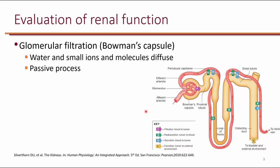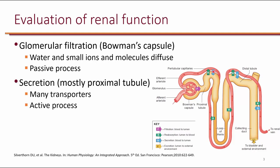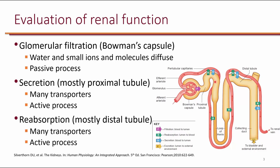Glomerular filtration is a passive process that occurs in the Bowman's capsule. During this process, water and small ions and molecules, including drugs, diffuse passively into the lumen. Secretion is an active process that occurs mostly in the proximal tubule, with many transporters involved. And finally, reabsorption is also an active process that mostly occurs in the distal tubule.